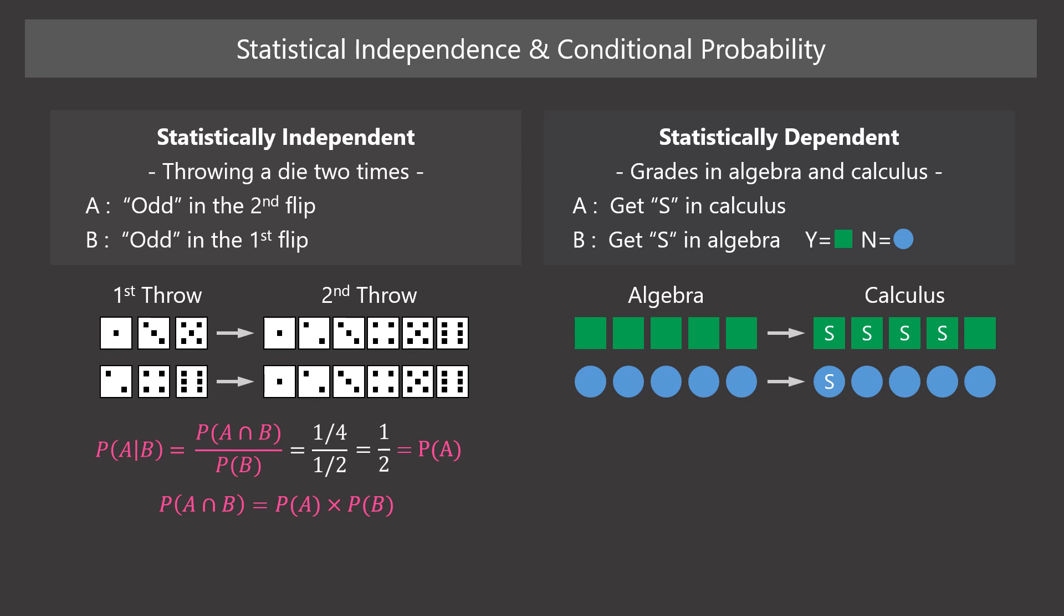Let's depict students who get standard pass in algebra by a square and who do not in a circle. Students who pass algebra are more likely to pass calculus too. Event A and event B are statistically dependent. In such a case, the probability of A given B is not the same as the probability of A.